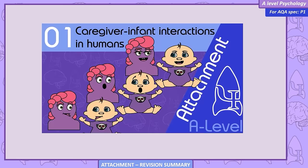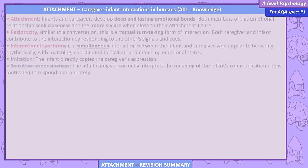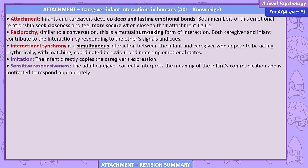Caregiver-Infant Interactions in Humans. Attachment: infants and caregivers develop deep and lasting emotional bonds. Both members of this emotional relationship seek closeness and feel more secure when close to their attachment figure. Reciprocity: similar to a conversation, this is a mutual turn-taking form of interaction. Both caregiver and infant contribute to the interaction by responding to the other's signals and cues.